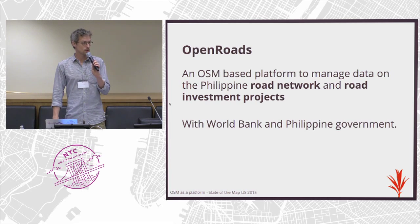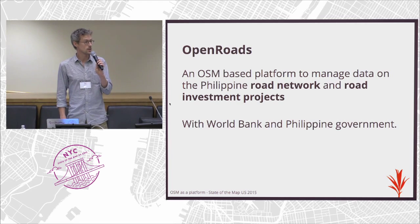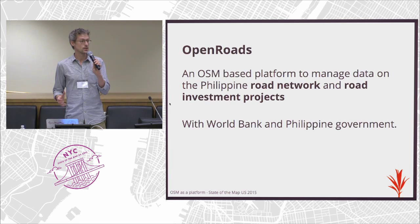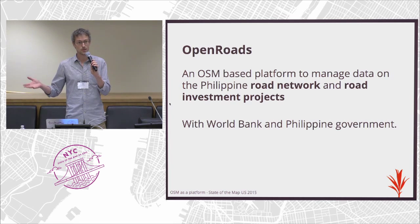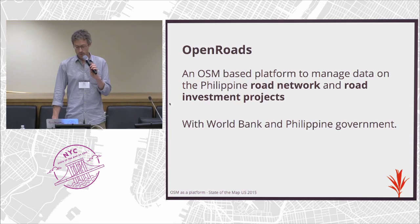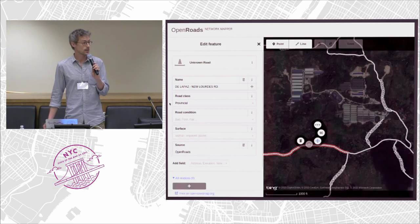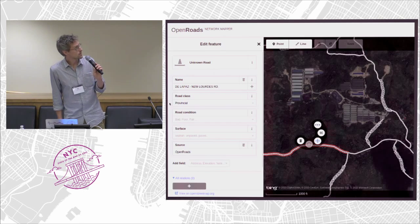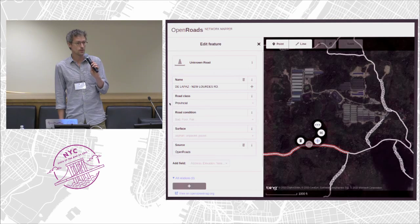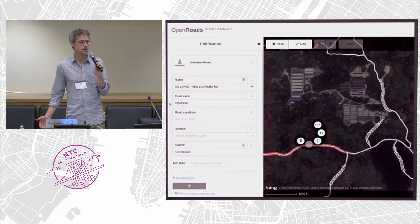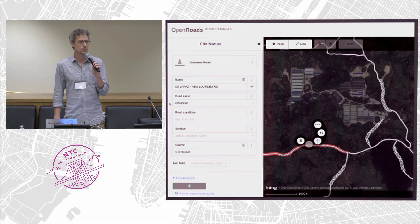Open Roads is an OSM-based platform — it's not in OpenStreetMap, but we use the OSM software. At its core, the data model is the same: we're storing data exactly the same way as OpenStreetMap, except it's in a separate instance. We use a lot of the software — for example, we use the iD editor with custom presets to fit the use case of the Philippine government. We've also hidden a few UI elements, such as areas, to streamline it for their use case. But other than that, it's pretty much iD.